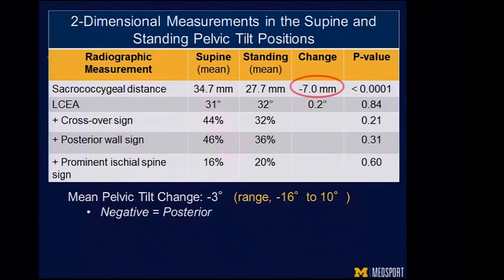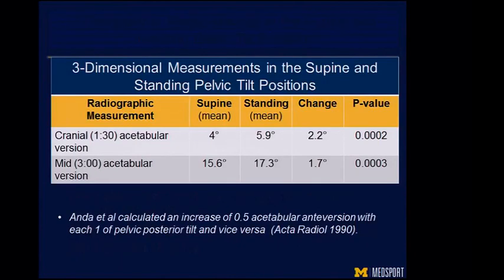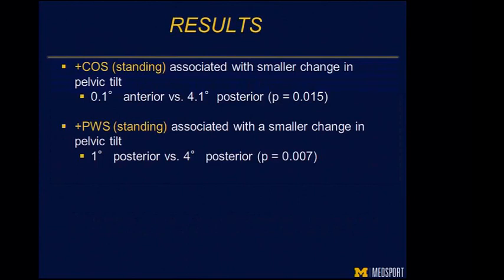In our initial analysis, sacrococcygeal distance moved seven millimeters, correlating with about a three-degree change in pelvic tilt. About a quarter of patients with a crossover sign had that sign disappear when standing. Functionally in the standing position, they are more anteverted, consistent with previous literature. Looking at those who have residual crossover sign in the standing position, this appears to be due to changes in pelvic mobility rather than the baseline point — these patients aren't moving posteriorly at all, compared to about four degrees on average for patients without a crossover sign.